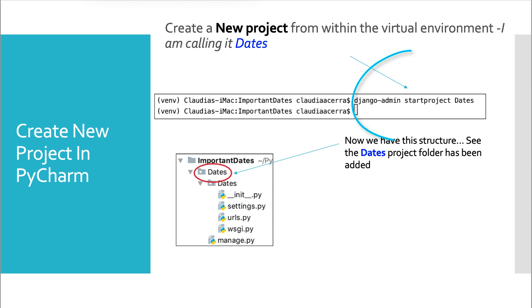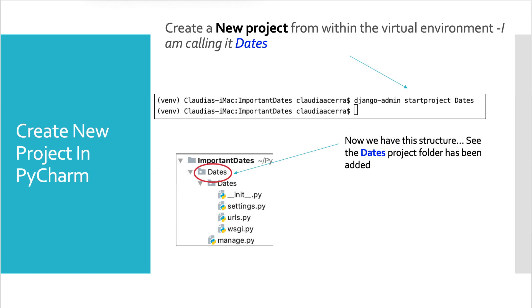Let's create the project. This is the command we use: django-admin, space, startproject, space, and then you give it a name. I'm giving mine the name of dates. When I execute this code, you'll see we now have a new structure within our PyCharm environment. We see dates as the project folder underneath our Important Dates container. You'll see something else that sometimes confuses people — underneath the project folder dates, you'll see a second folder called dates. That could be a little confusing, but that is the sub-folder to your project folder.